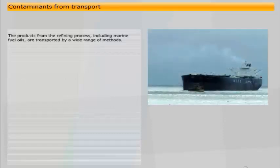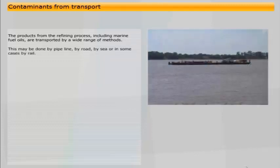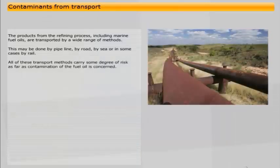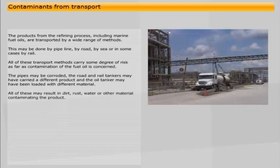The products from the refining process, including marine fuel oils, are transported by a wide range of methods. This may be done by pipeline, by road, by sea, or in some cases by rail. All of these transport methods carry some degree of risk as far as contamination of the fuel oil is concerned. The pipes may be corroded. The road and rail tankers may have carried a different product, and the oil tanker may have been loaded with different material. All of these may result in dirt, rust, water, or other material contaminating the product.